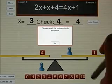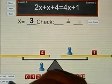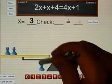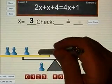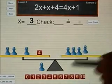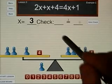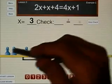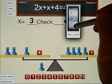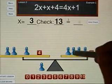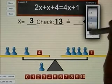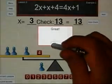To get the correct check, we clear the board and we reset the problem one more time. I have 2x's plus x plus 4 equals 4x plus 1. And now, if each x is 3, I have 3, 6, 9, and 4 is 13. And on the right side, I have 3, 6, 9, 12, and 1 is 13.